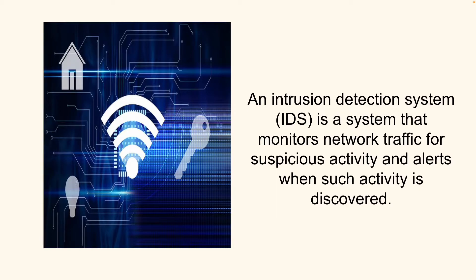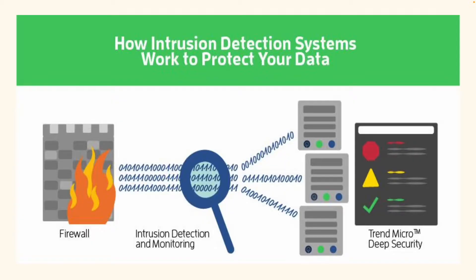When we build an intrusion detection system, we can detect and stop these intrusions. As we know, even our firewall — like the Windows firewall — can sometimes fail. That's why we install antivirus software; there are different types like Avast, McAfee, Kaspersky, and many more. But the new development here is using machine learning algorithms.